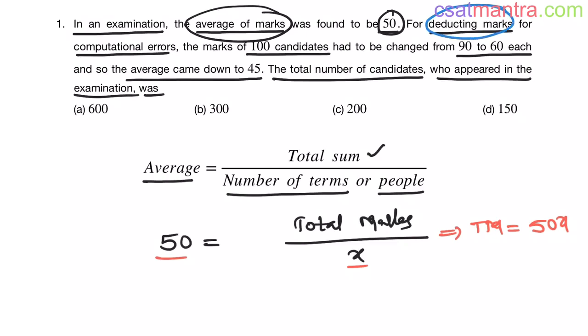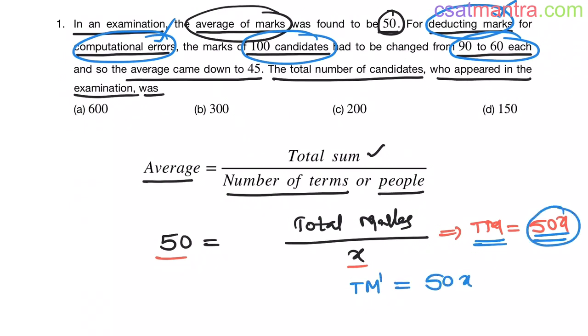Now for deducting marks for computational errors, the marks of 100 candidates had to be changed from 90 to 60 each. This is old total. Now after deducting marks for computational errors, I am taking new total as TM prime, which equals old total minus 50x minus. Minus because you are deducting. How many marks you are deducting for each candidate?